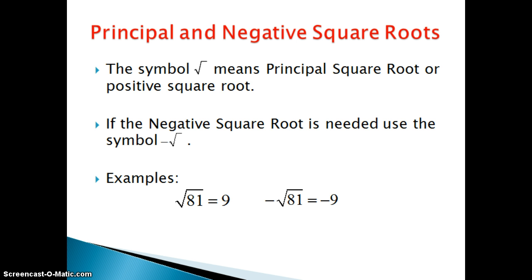Now we have two different types of square roots and these are our principal and our negative square roots. The regular symbol, that radical sign, means principal square root or the positive square root. But if you see the radical sign with a negative in front of it, that is asking for the negative square root. You can think of the radical sign as parentheses and if you have a negative on the outside it just negates what's on the inside.